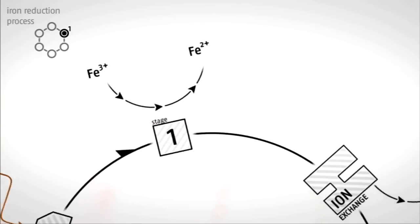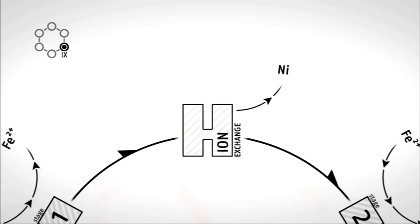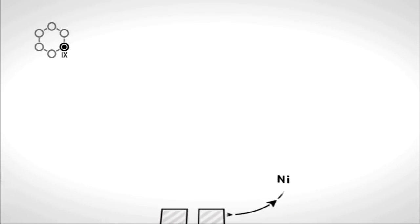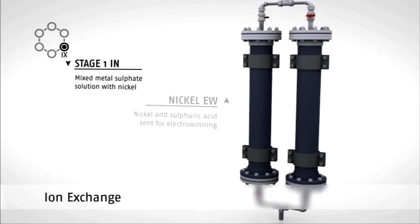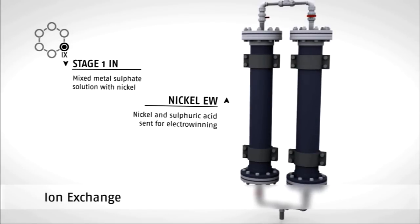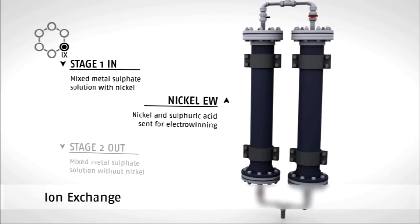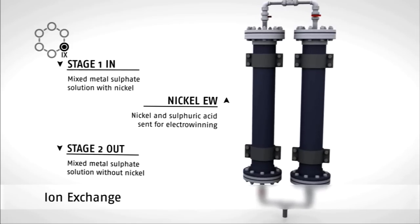After stage 1 has occurred, the nickel is removed. Here we show how conventional ion exchange works. The ion exchange process involves pumping the PLS through columns filled with resin. The bead-like resin selectively attract the dissolved nickel in the PLS.